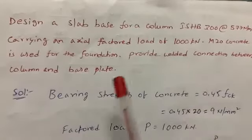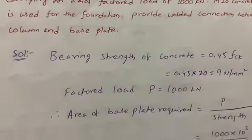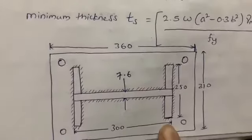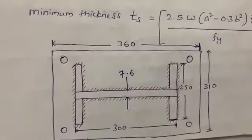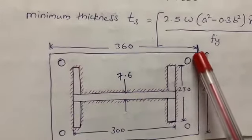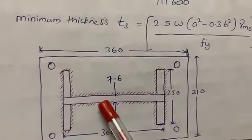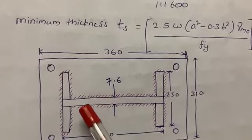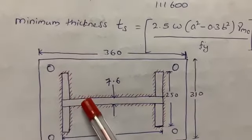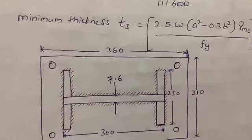By using welding, we are going to connect the column on the base plate. In the diagram, the red color portion is the welding portion, and this is the base plate. This is our I-section column. By using welding we connect the I-section to the base plate, and by using four bolts we connect this plate to the concrete foundation.